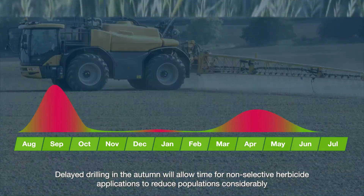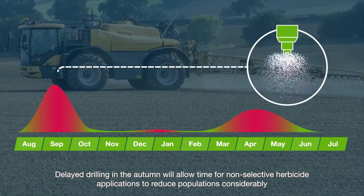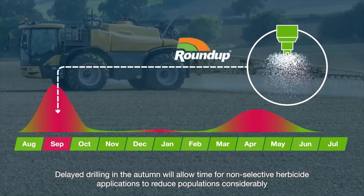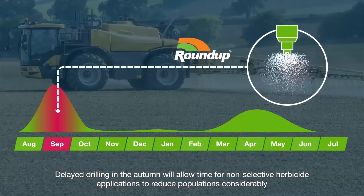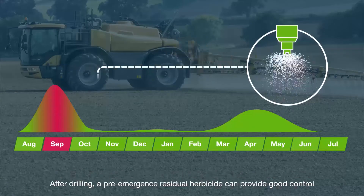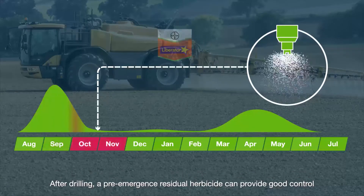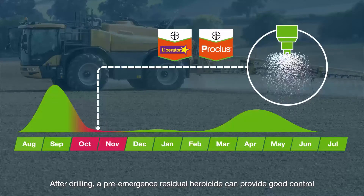Delayed drilling in the autumn will allow for non-selective herbicide applications to reduce populations considerably. After drilling, a pre-emergence residual herbicide can provide good control.